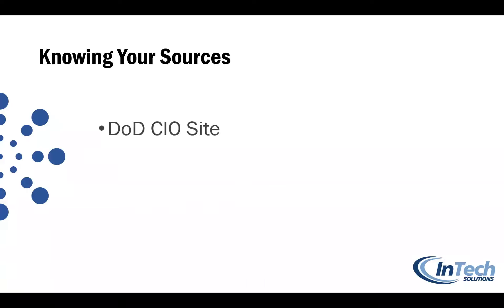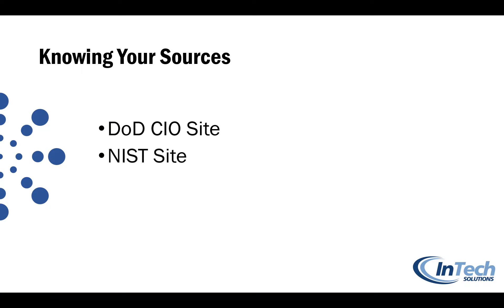Make sure you know your sources. Don't just trust what people say — know where to find source information. Source information for the program can be found on the DoD CIO's site, the NIST site, and the Federal Acquisition site where you can find the FARs and DFARs clauses and requirements. Always use that source documentation.